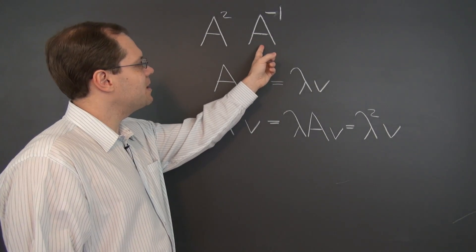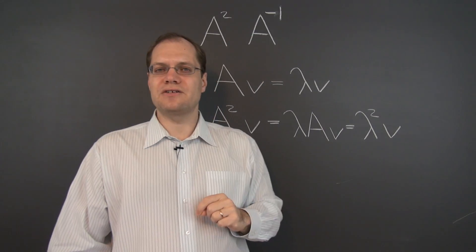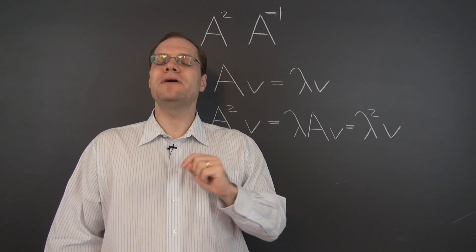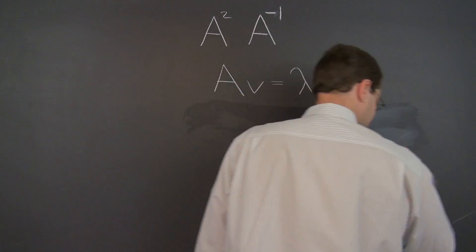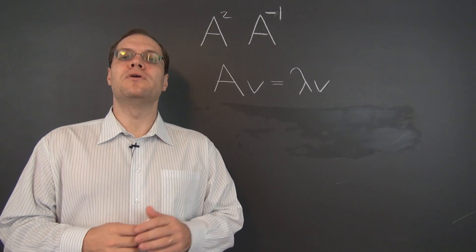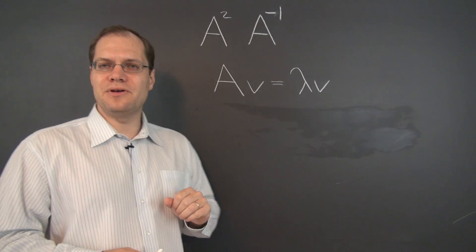Let's see what we can say about the eigenvalues and eigenvectors of A inverse. We'll use the same starting point as in the previous discussion, except now we'll multiply both sides by A inverse.